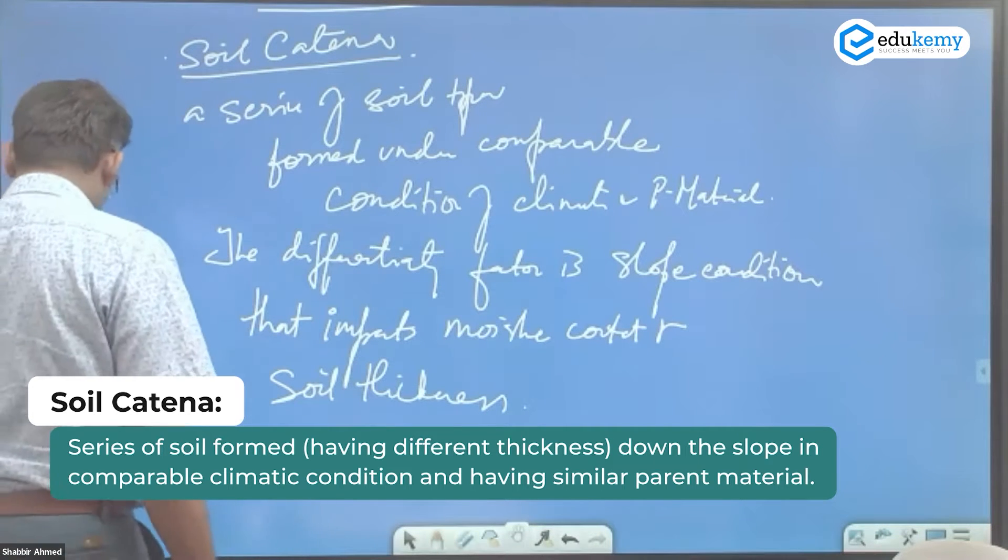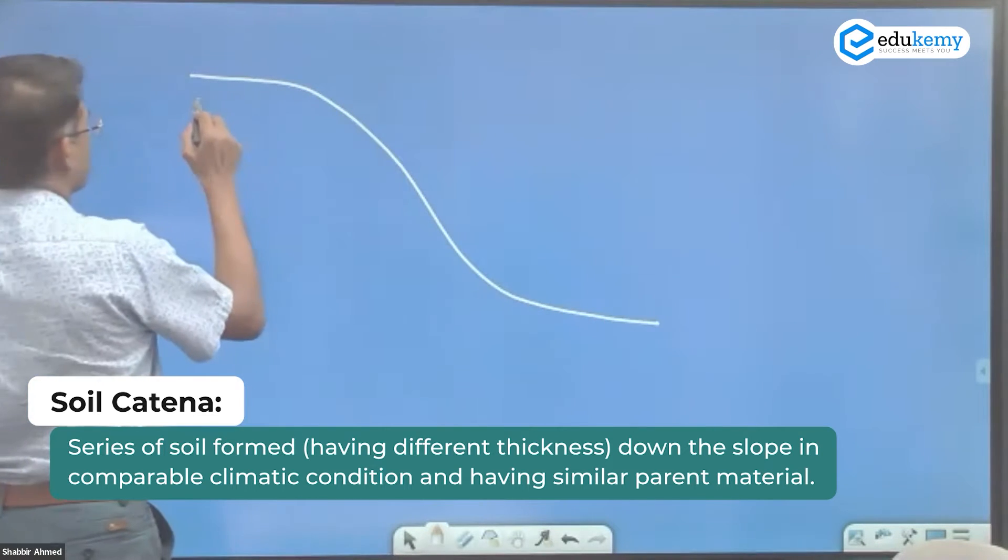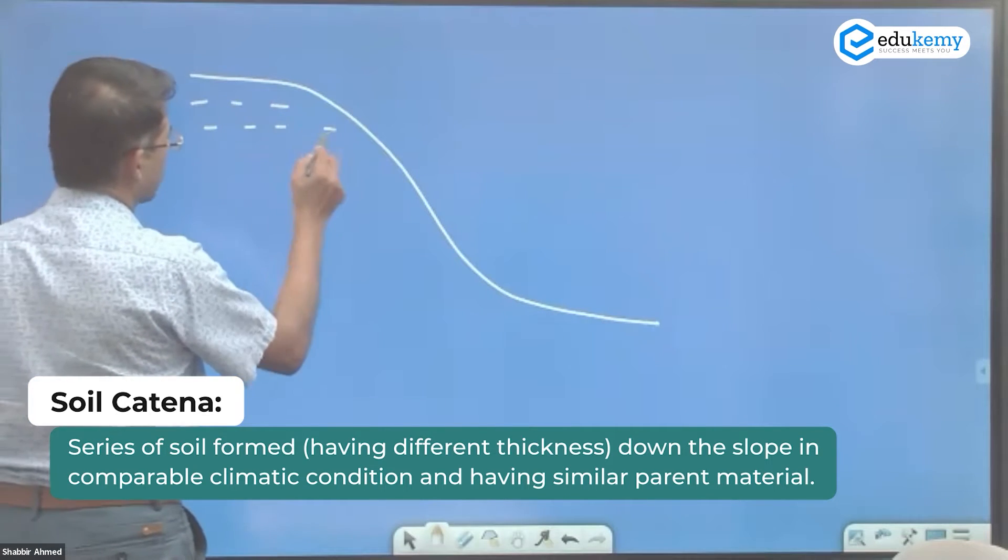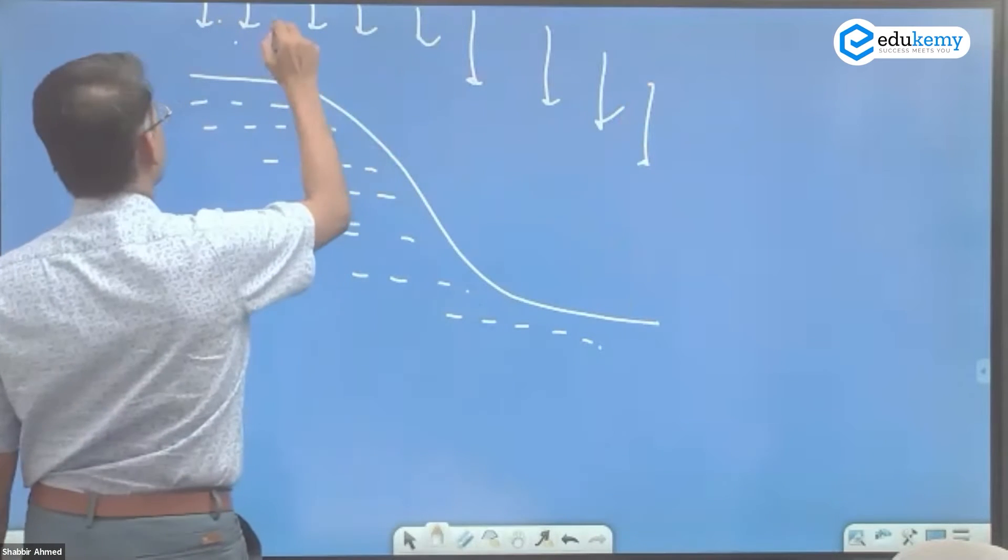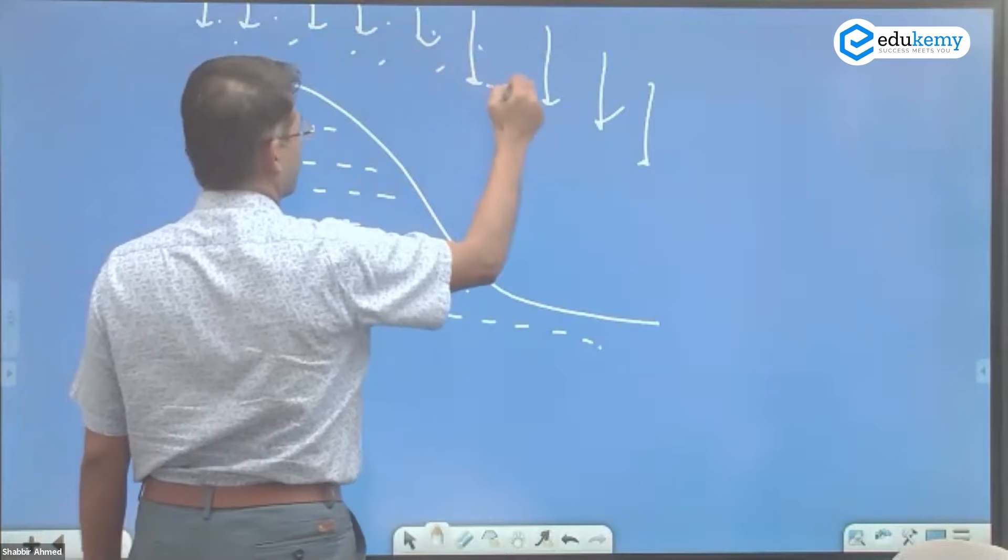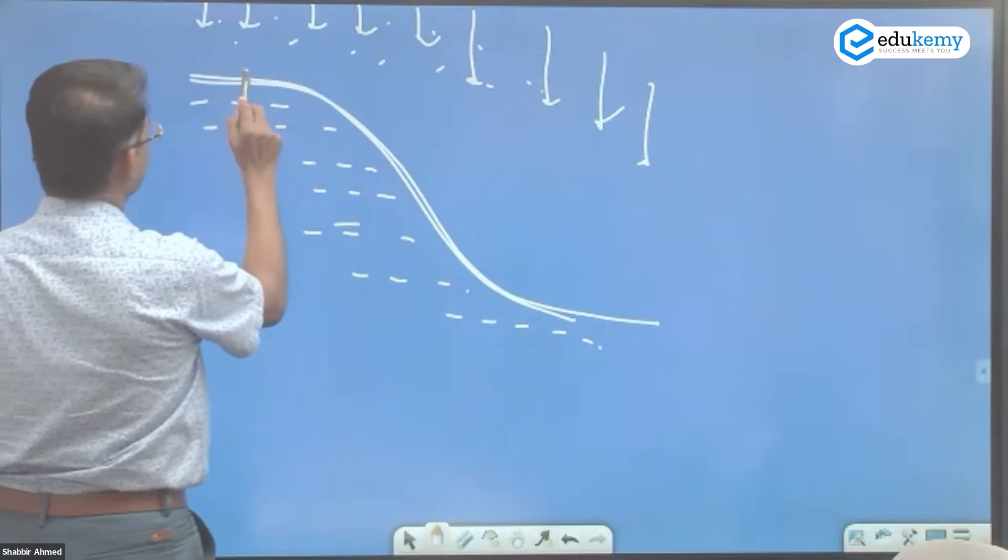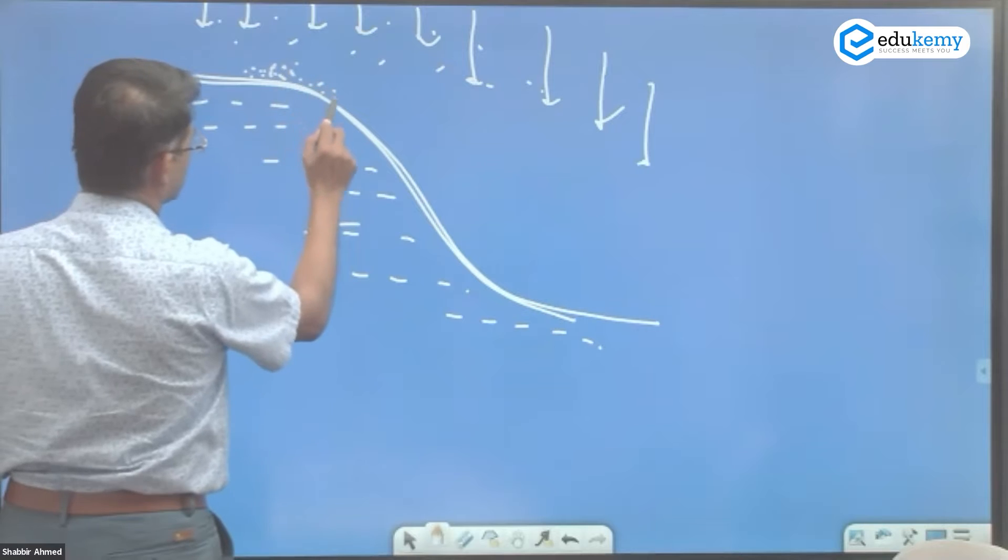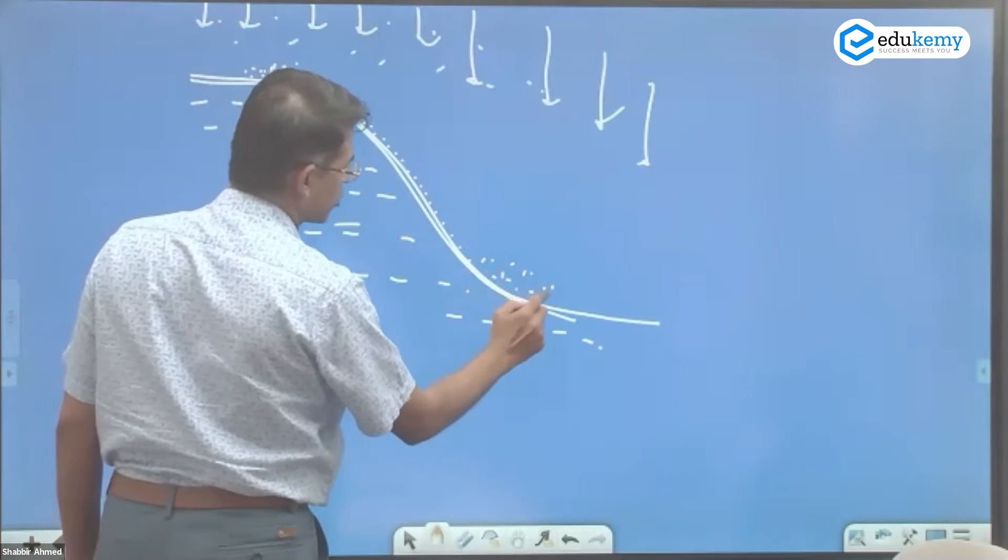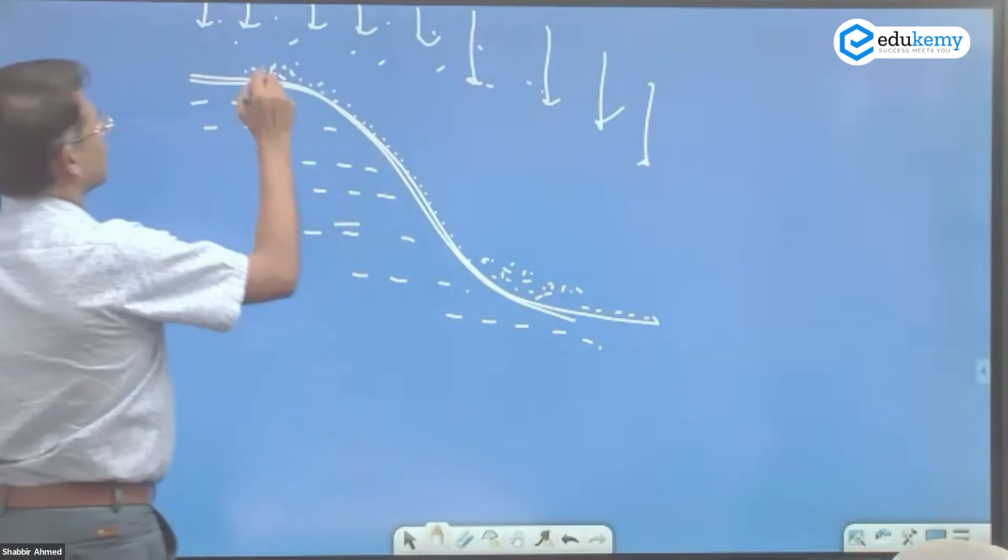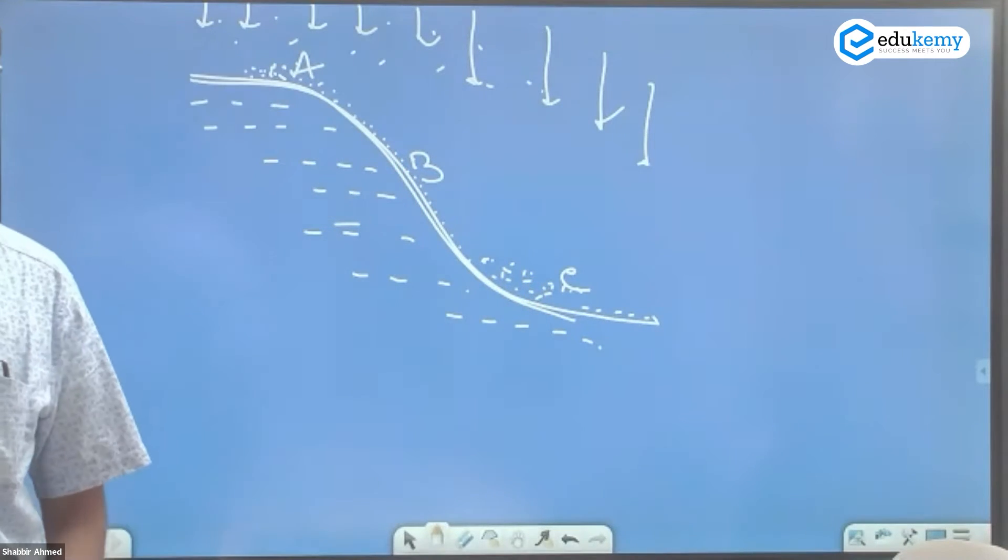Say this is a landscape, some slope. The rocks are all same. The climate is same everywhere. The same type of temperature, the same type of rainfall. But in this slope face, the soil that develops here is not same as soil developing here is not same as soil developing here. So this is soil A, this is soil B, this is soil C.